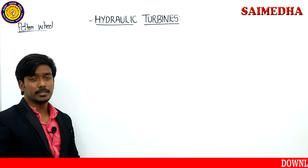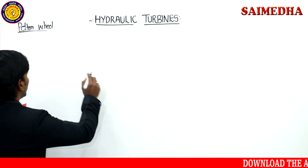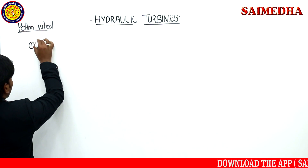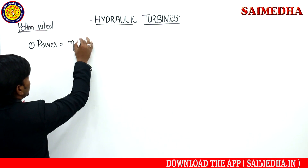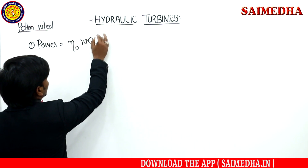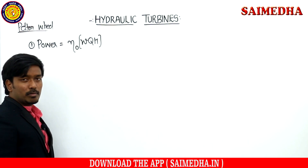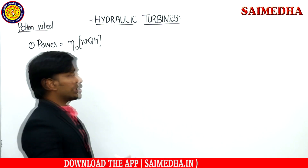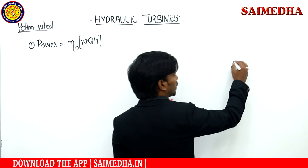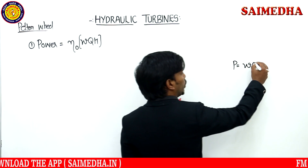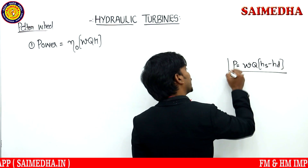Let's learn some more important formulas regarding the Pelton wheel turbine. The first point we need to remember is power. Whenever overall efficiency is given, you need to multiply with overall efficiency, and the formula is w × Q × H. This is the efficiency formula for power. Then w × Q × H gives the total power required to send water from one height to another height. And then w × Q × (Hs − Hd), suction head minus delivery head.